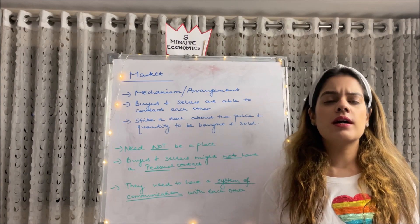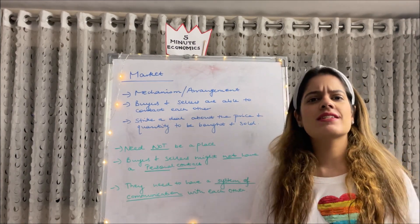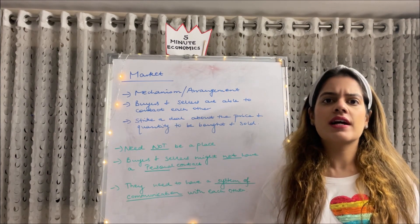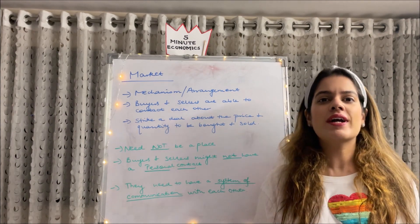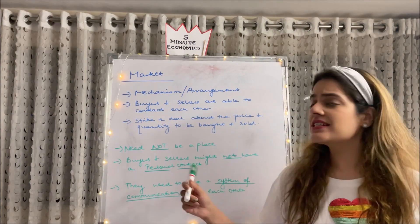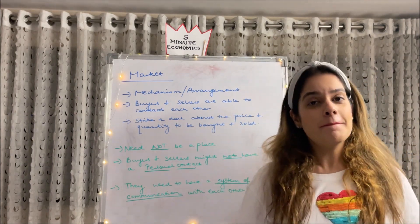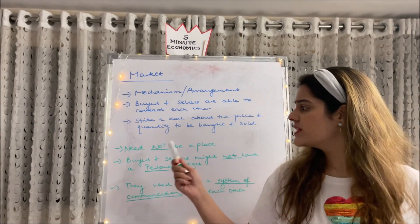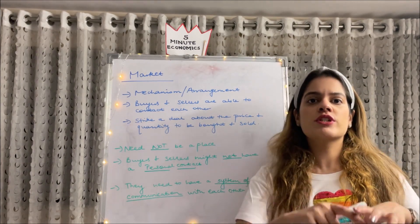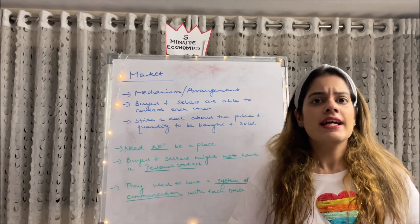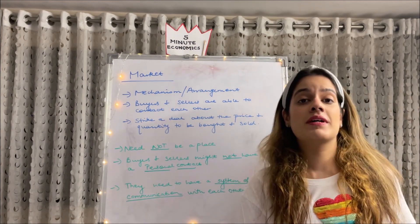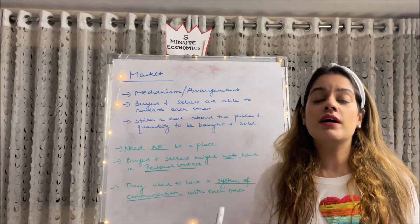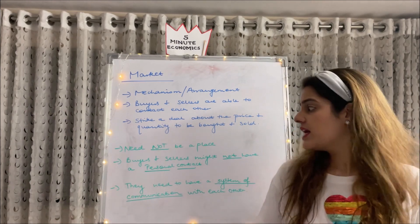Before we go to the types of markets, let me tell you a little about what exactly a market is. Basically, a market is a mechanism or an arrangement through which buyers and sellers are able to contact each other and strike a deal about the goods to be bought and sold. Some features about market: firstly, it need not be a particular place — it is not restricted to a geographical area. It can be as small as a local market and as big as the world market or stock market.